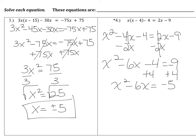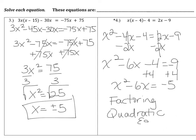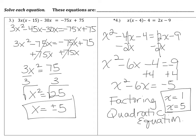We cannot solve this by isolating the variable because having both an x term and an x squared term in the same problem makes that impossible. Very soon — not today — we're going to learn how to solve an equation like this. There are two methods: the factoring method, which you'll learn tomorrow, or the quadratic formula, which you may have heard of. The answer to this question is x equals 1 and 5, which you'll learn how to get later.